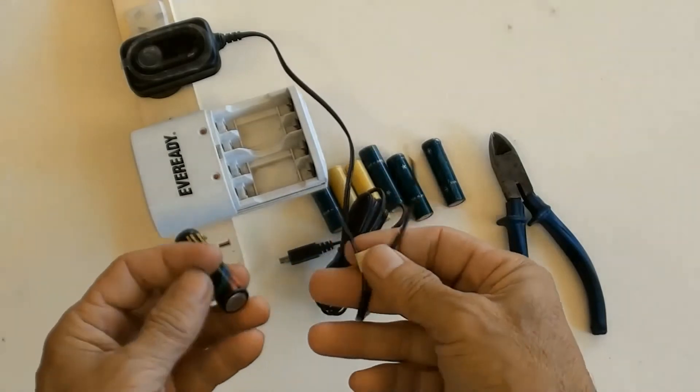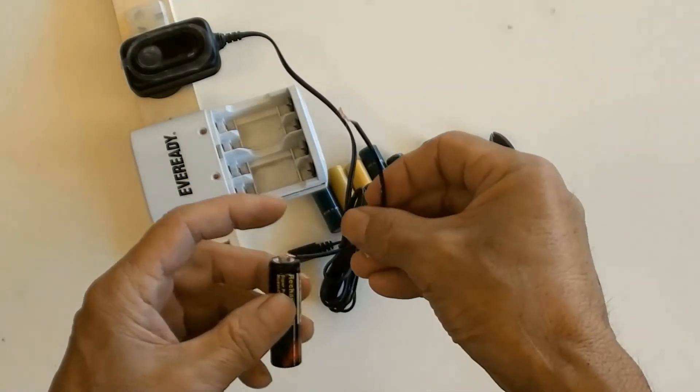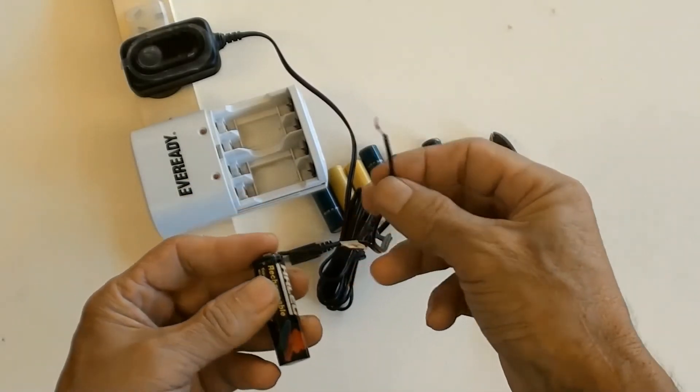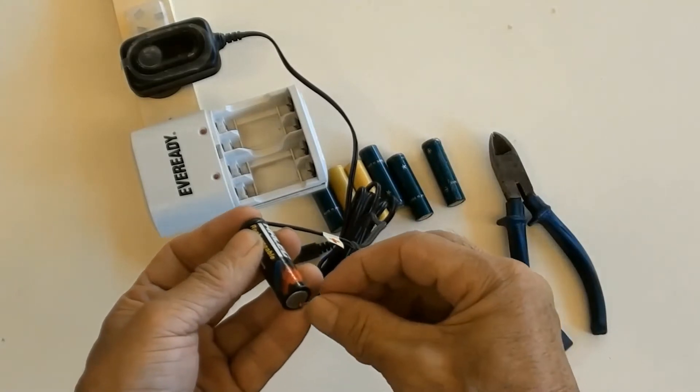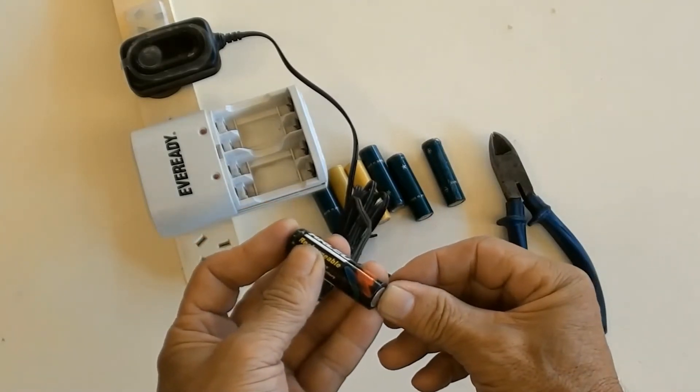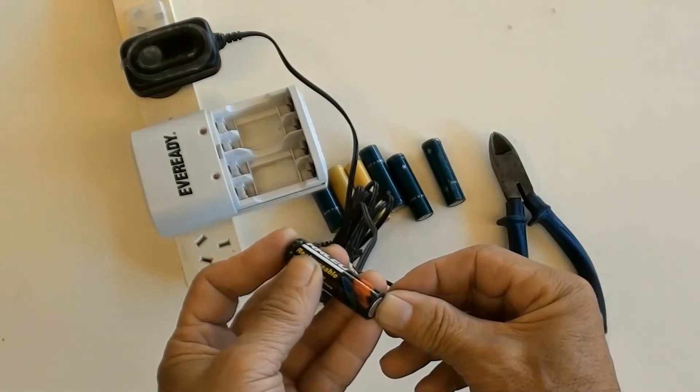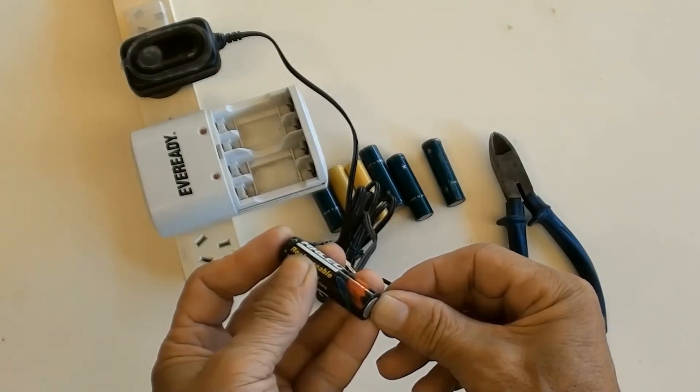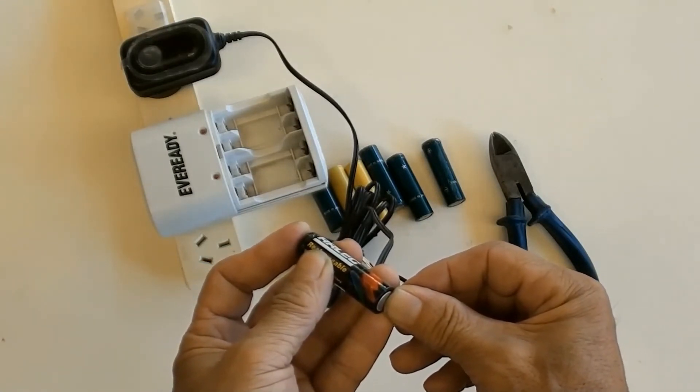Let me start to boost these batteries. Mobile phone charger positive to AA battery positive, and phone charger negative to AA battery negative. Staying there about 30 seconds or a minute.